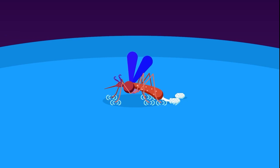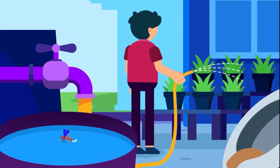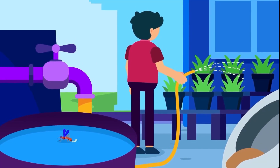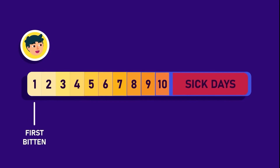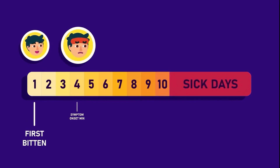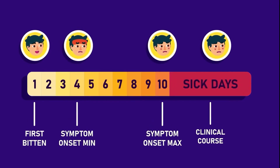These mosquitoes can typically be found laying eggs near standing water in containers that hold water, like buckets, bowls, animal dishes, and others. The incubation period of Dengue is 4 to 10 days once the mosquito has bitten the individual.